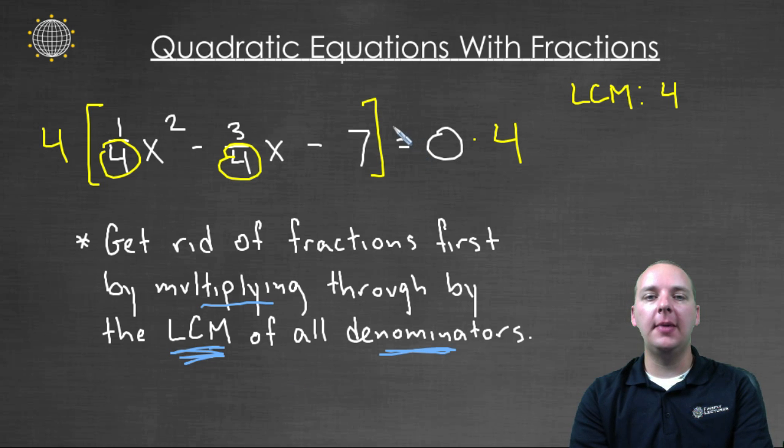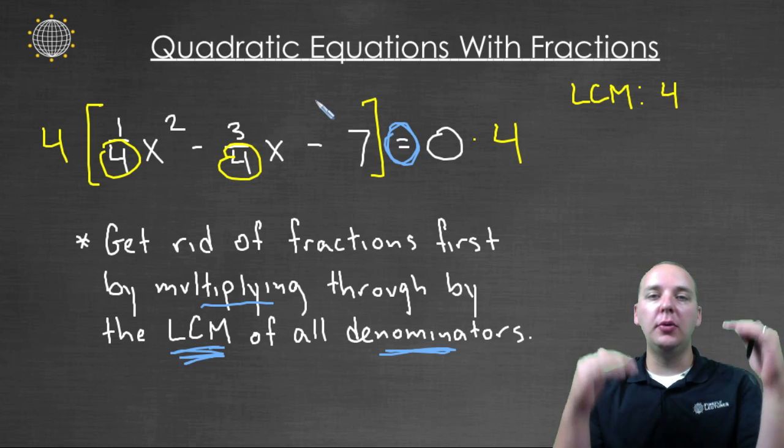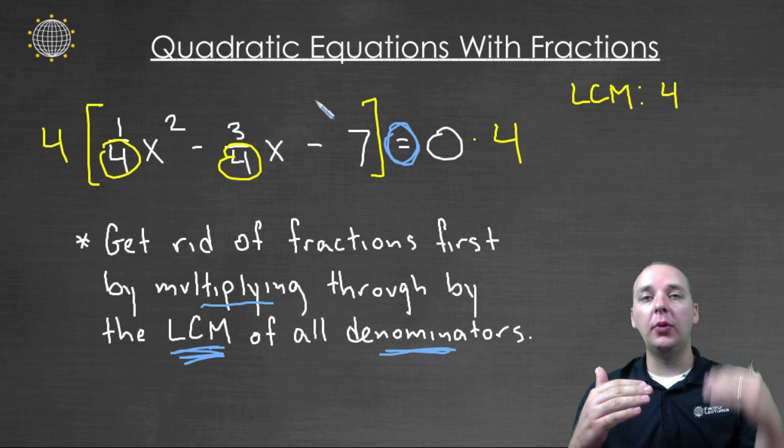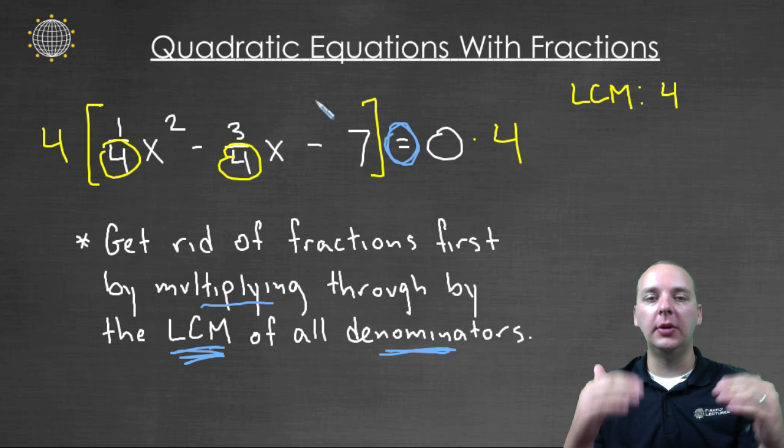Now the reason that's okay is because these are equal to each other, and if you multiply both sides equally by four, that equality still holds true. It's not like you multiplied one side by four, but not the other one. So we still have an equality here.